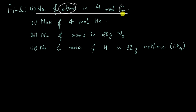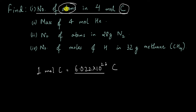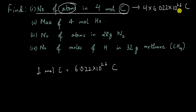Similarly, the number of anything in one mole of that thing — one mole of carbon will have 6.022 × 10²³ carbon atoms. That's the only difference. In a dozen we have 12, and in a mole we have 6.022 × 10²³ — a huge number of atoms, but the concept is still the same. So to find the number of atoms in 4 moles of carbon, all we need to do is multiply this with 4. In 4 moles of carbon, we will have 4 × 6.022 × 10²³ carbon atoms.